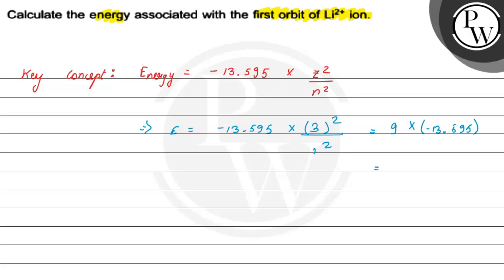If we calculate it, we get -122.355 electron volts. So the final answer is -122.355 eV.